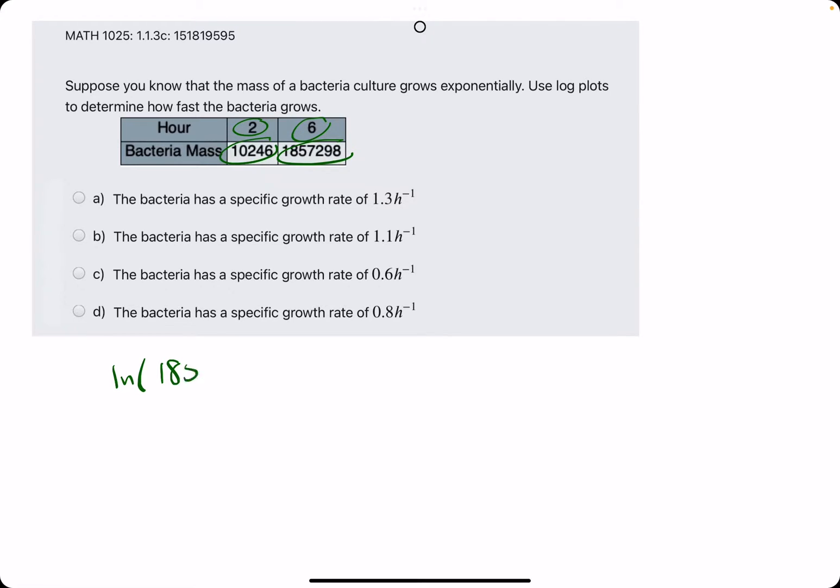So, we're going to take the ln of the 1857298, huge number, and we're going to take the ln of the 10246.